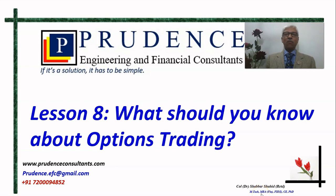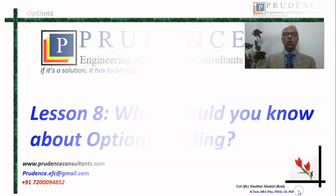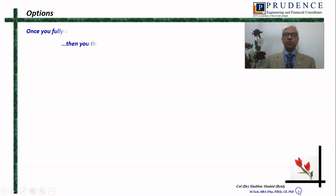Once you have understood, you can take on options. But when you start learning options, what is it that you must look out for? What is the chronology or the sequence in which we should learn options?